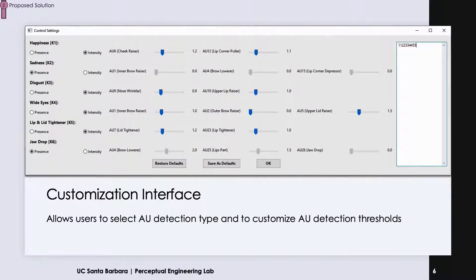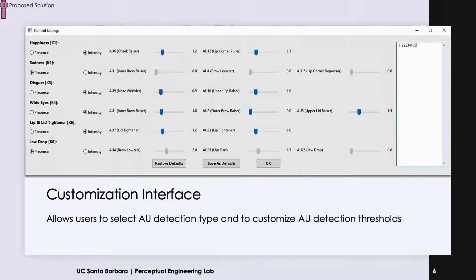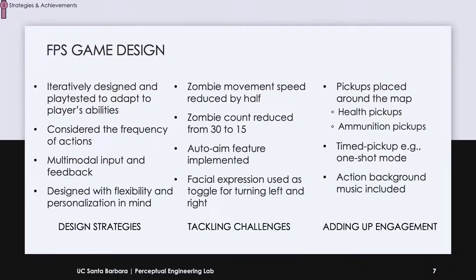We created a customization interface by which we let the user adjust the sensitivity of the system. Once the user selects the type of AU detection, depending on their choice, the next step can be adjusting the detection threshold. All changes take effect immediately.